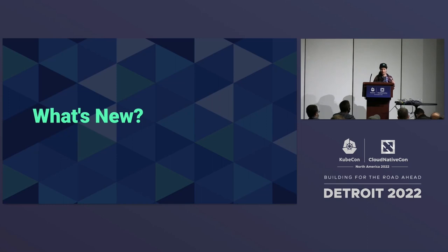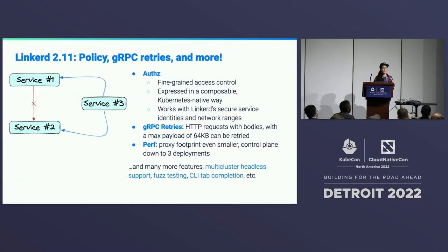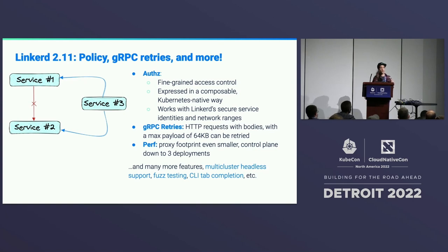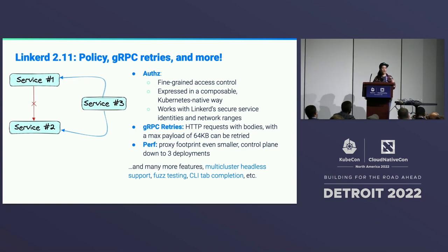So, what's new in the project over the past year or so? Linkerd 2.11 was a really exciting release. This is when we first added server-side authorization. We've had MTLS for a long time, which gave us authentication — we know when one service calls another, we know who that is because they have an identity bootstrapped from the service account. But for the first time in 2.11, we gave you the ability to restrict who you would accept requests from. A service could say, 'I would only accept requests from this other service,' or 'from this subnet.' So finally, there was fine-grained access control, and you could start implementing policies that a lot of people were asking for.